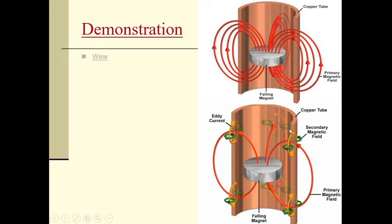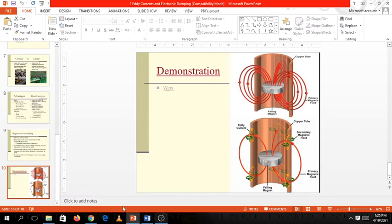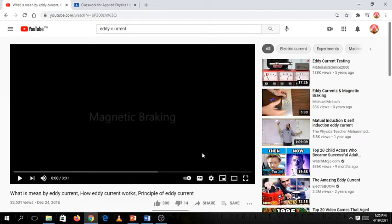So this is your primary magnetic field. It will produce these yellow lines, which is your eddy current, your electric field. But then again, because there is a change in electric field, it produces the green, your magnetic field. So that is why this magnetic field opposes your primary magnetic field. The secondary magnetic field in green opposes your red primary magnetic field, causing the drop of the falling magnet to be slowed down. The falling magnet is slowed down. So I'll be showing you a video on that one.